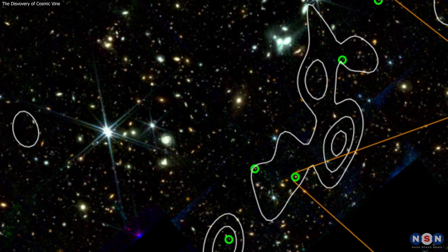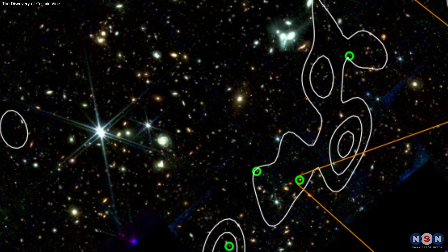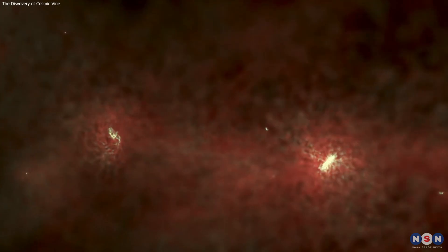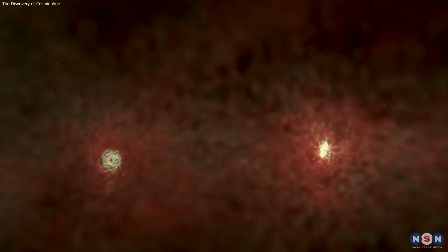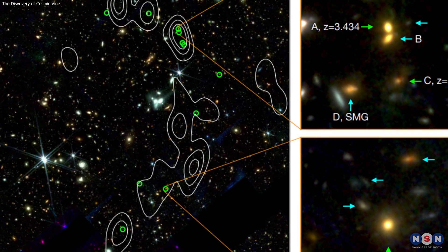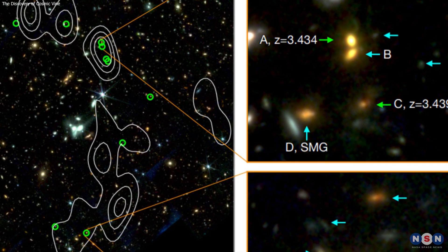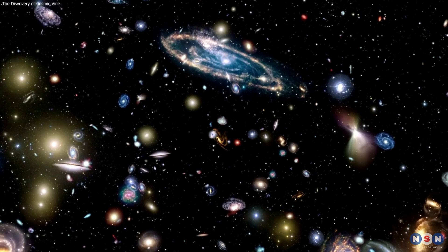In conclusion, the cosmic vine is a remarkable discovery that reveals a new aspect of the early universe, and challenges our understanding of how galaxies form and evolve. It is one of the largest and oldest structures ever found at a very high redshift of 3.44, consisting of 20 galaxies.